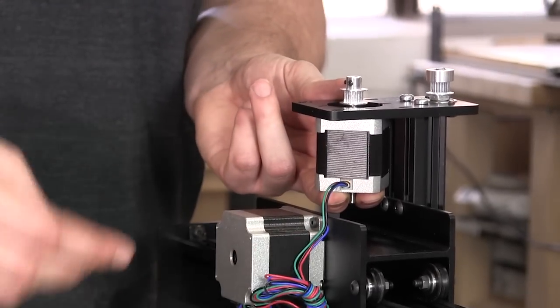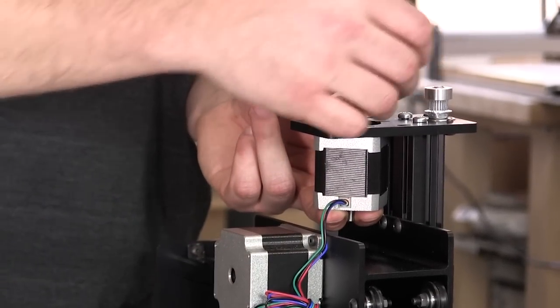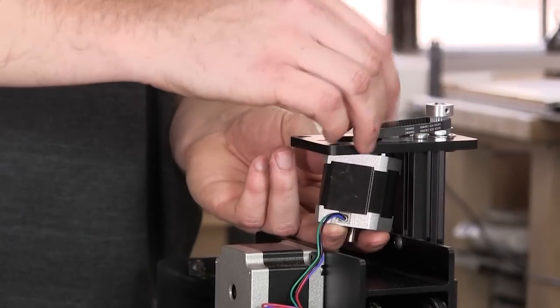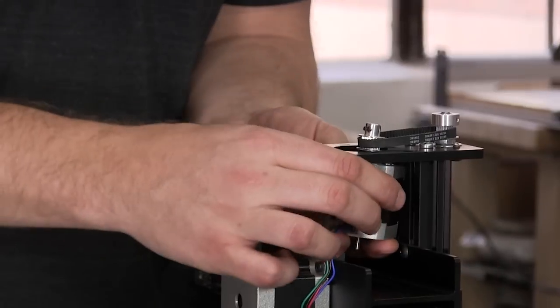Next take the small fixed length belt and loop it around both pulleys. The one for the Z-axis motor and the one that's on your drive rod.